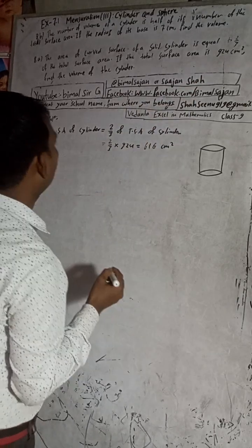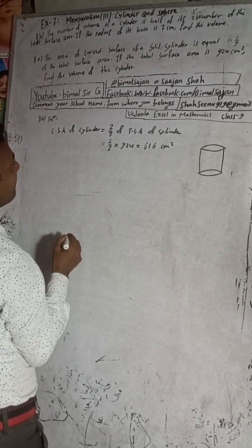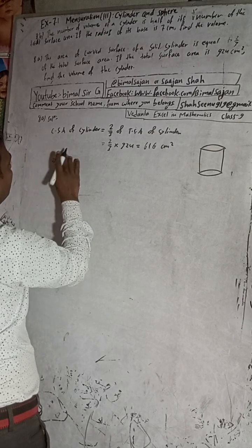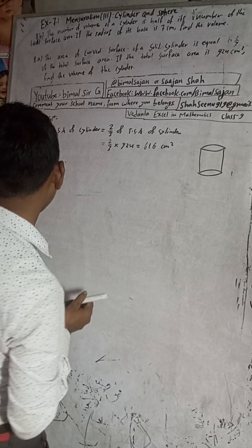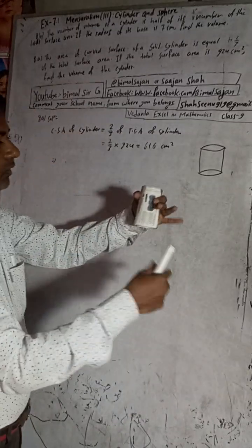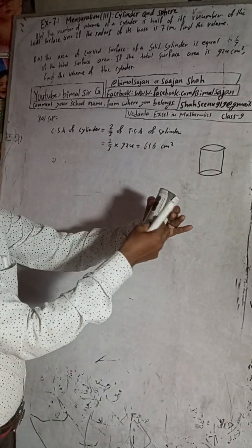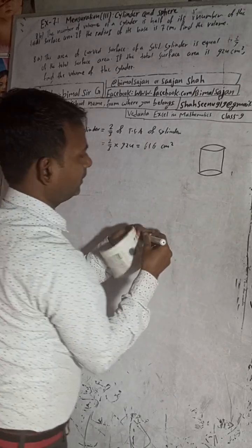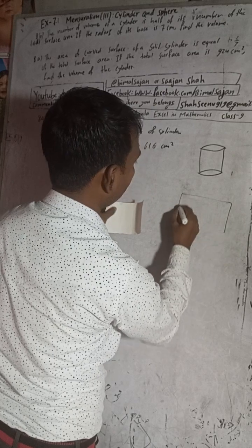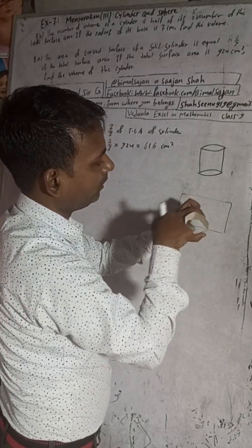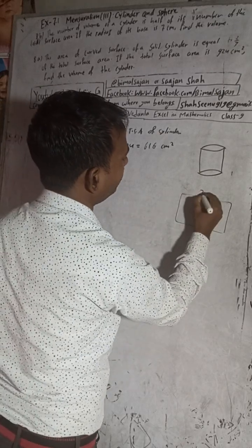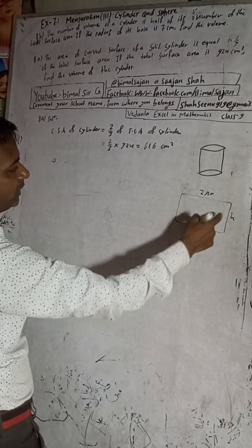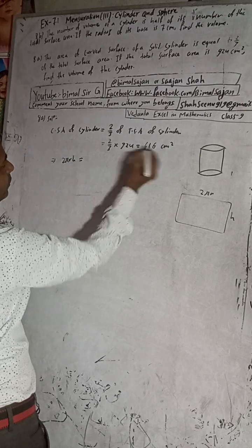Now we have the total surface area given and the curved surface area calculated. To understand the curved surface area formula, imagine cutting the cylinder along its side and unrolling it — it becomes a rectangle. The length of this rectangle is the perimeter of the circular base, which is 2πr, and the width is the height h. So curved surface area = 2πrh = 616. This is equation one.